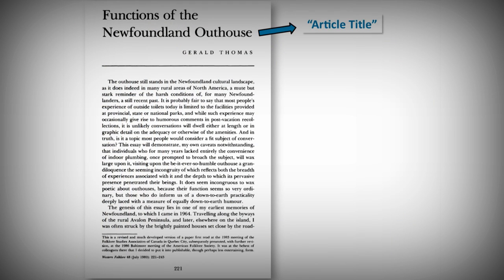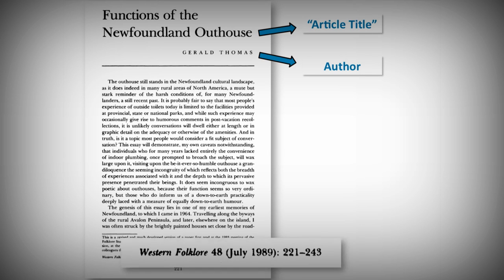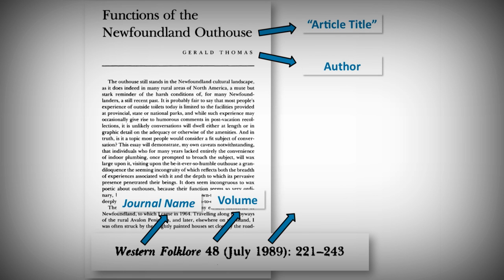But where do you find all that information? Everything you need is usually right there in the article, whether it's a print journal or an online PDF. You can easily find the article title and author. On each page, as either a header or a footer, is the journal name, volume, date, and often the page range.